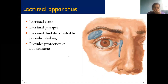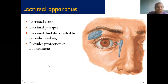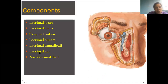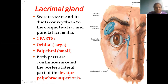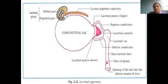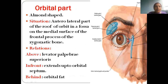That is all about the lacrimal gland and lacrimal apparatus. For any question on lacrimal apparatus, write about all these components and draw a well-labeled diagram. The lacrimal gland secretes tears and the ducts convey them to the conjunctival sac. The orbital and palpebral parts are separated by the levator palpebrae superioris muscle.